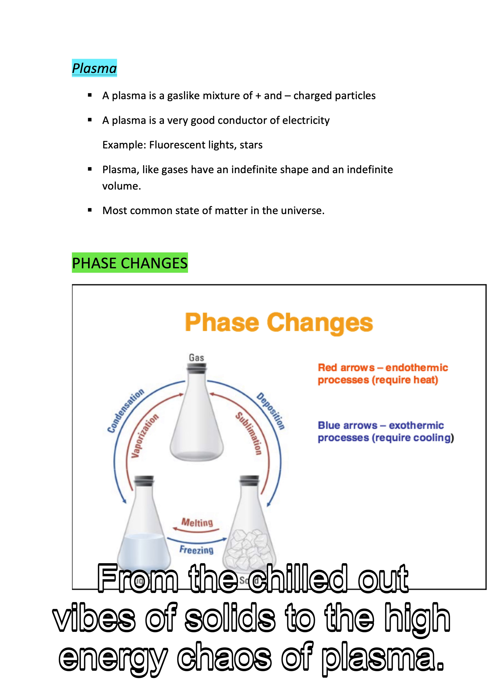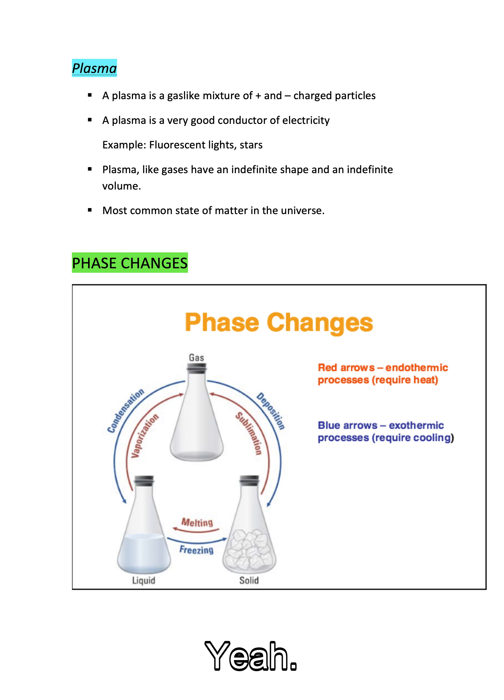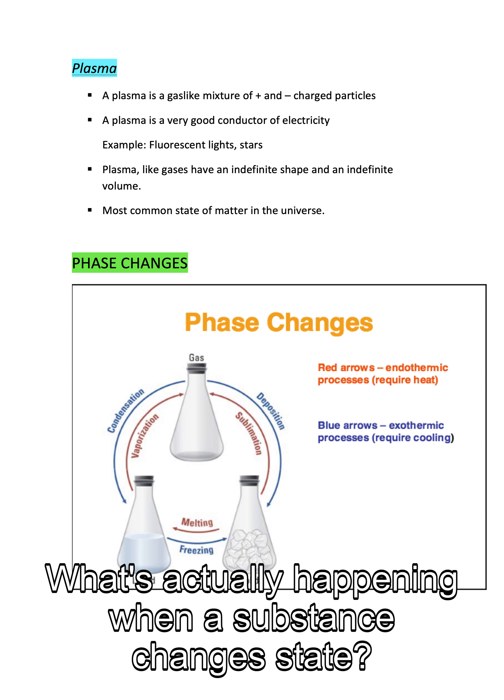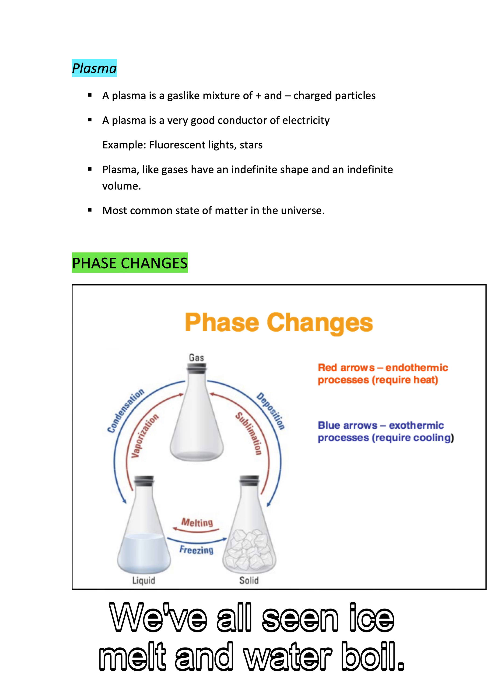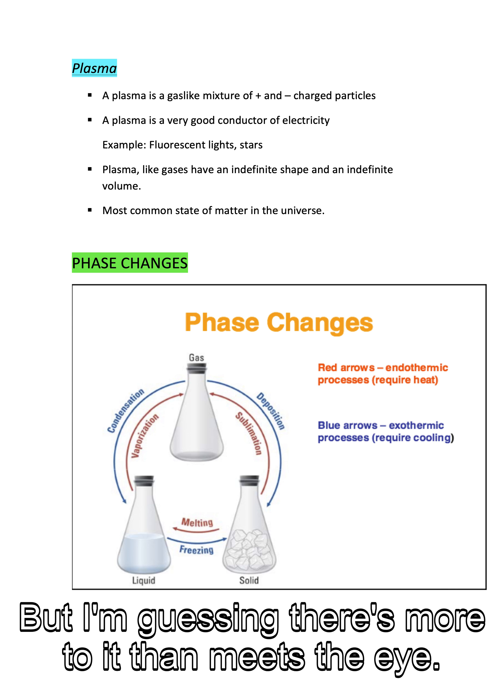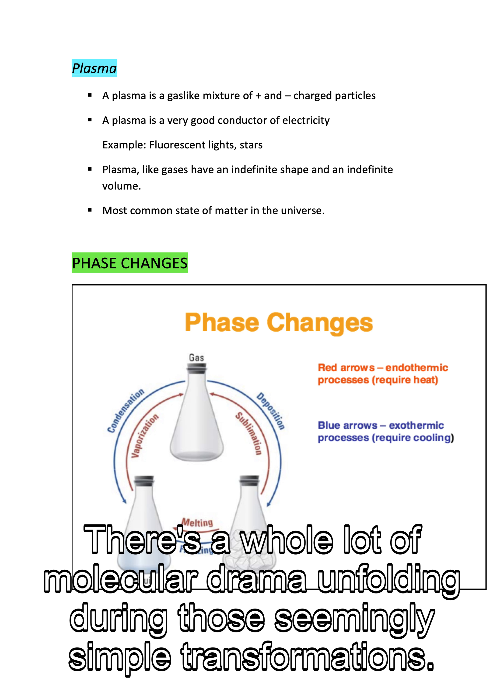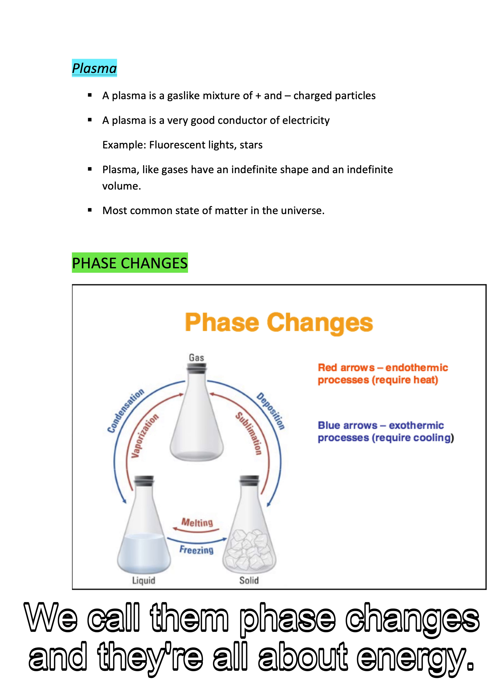So we've covered the four states of matter, from the chilled out vibes of solids to the high energy chaos of plasma. But what about the transitions between them? What's actually happening when a substance changes state? We've all seen ice melt and water boil, but I'm guessing there's more to it than meets the eye. You're right. There's a whole lot of molecular drama unfolding during those seemingly simple transformations. We call them phase changes, and they're all about energy.